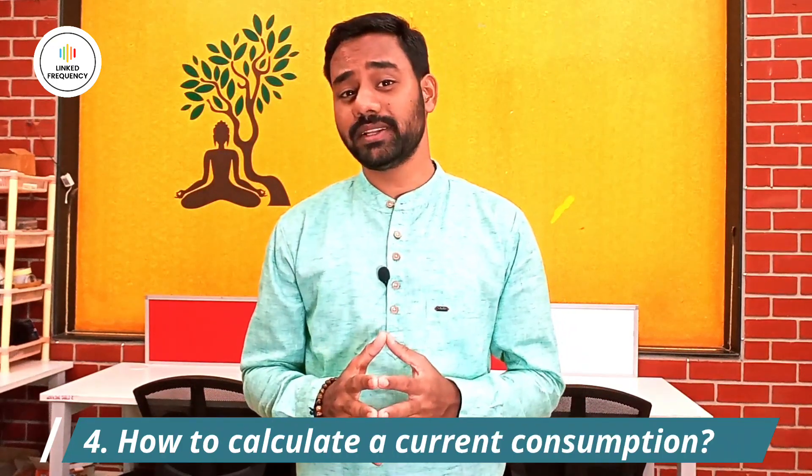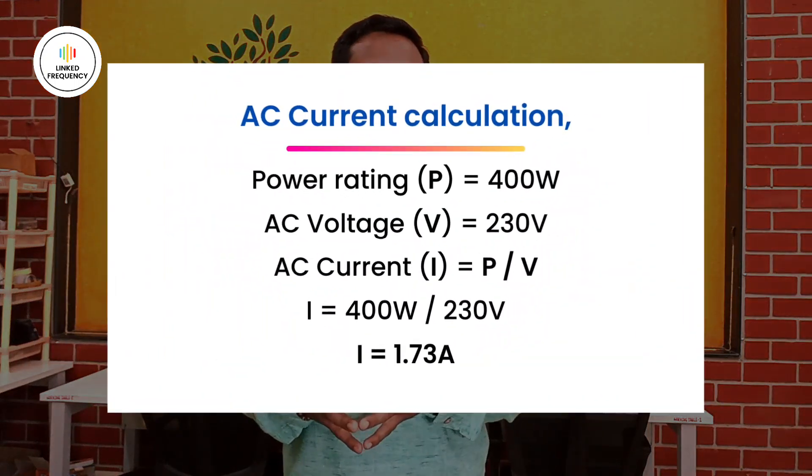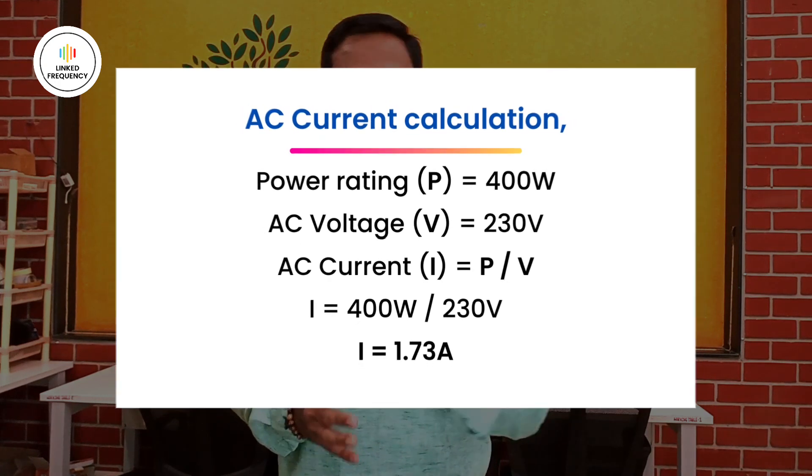Now let's talk about how to calculate the current consumption of any device, using two examples. For the first example, consider a mixer or grinder. On average, mixers consume 300 to 500 watts; we'll use 400 watts. In India, the AC outlet is 230 volts at 50 Hz. Using the basic calculation: 400 watts divided by 230 volts equals approximately 1.7 amperes. This 1.7-ampere current rating is the maximum current consumed by that AC appliance.